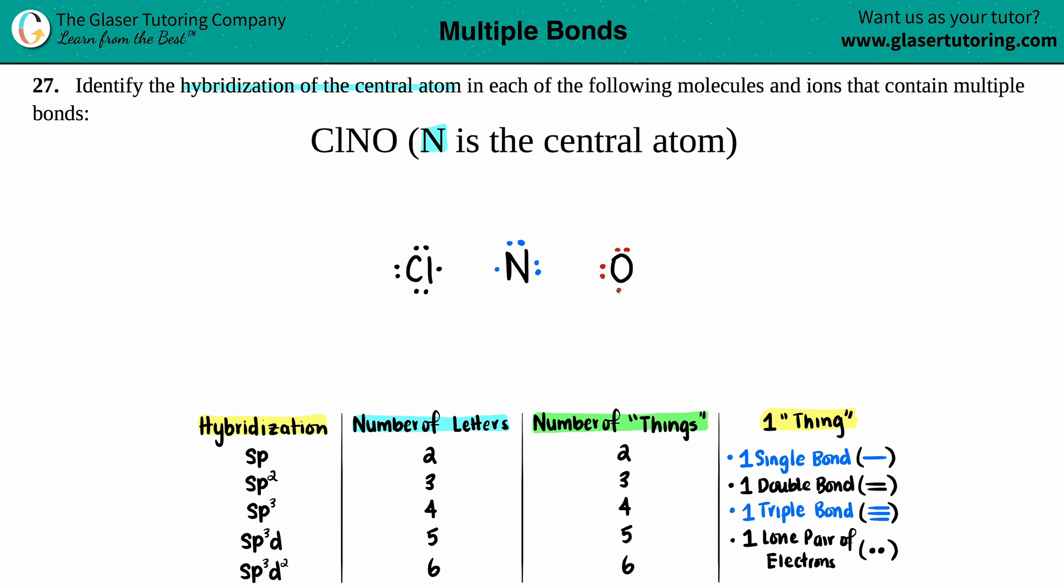We're going to always draw single bonds first and then check the octet. Dot to dot makes a single bond, dot to dot another single bond.